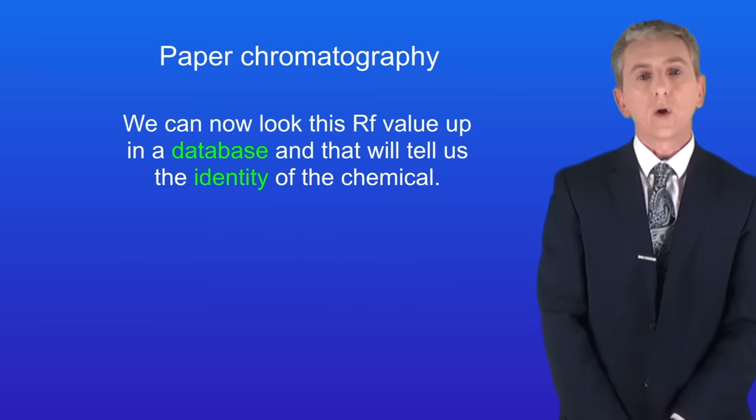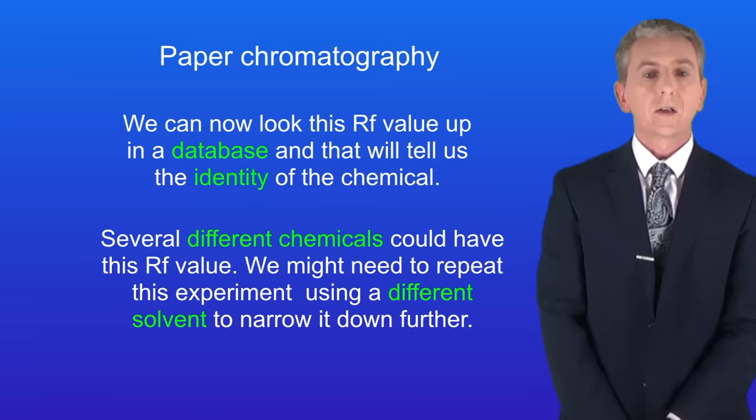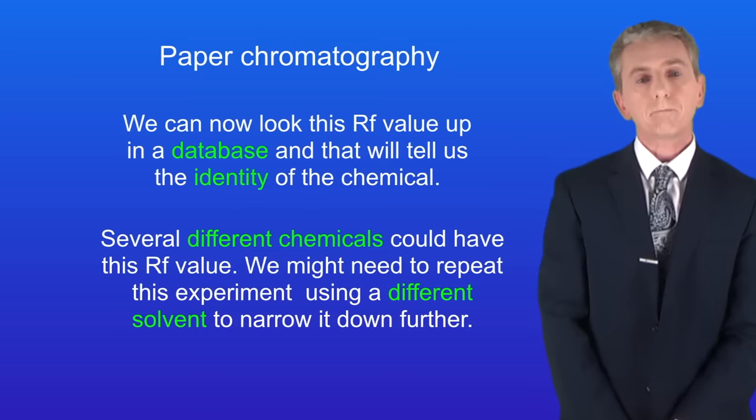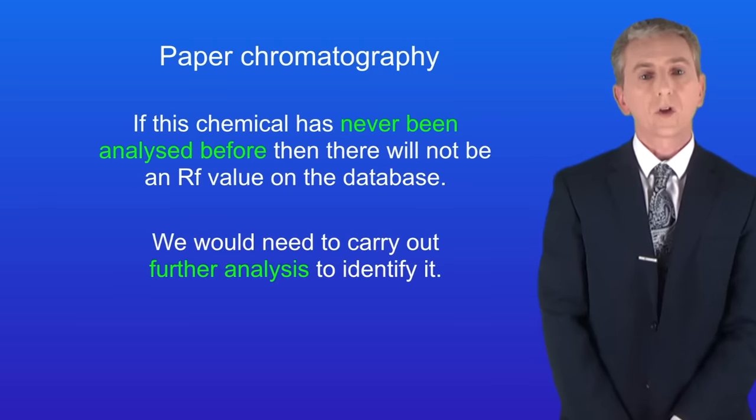We can now look this Rf value up in a database and that will tell us the identity of the chemical. Now I should point out that several different chemicals could have this Rf value so we might need to repeat this experiment using a different solvent to narrow it down further. Also if this chemical has never been analyzed before then there will not be an Rf value on the database so we'd need to carry out further analysis to identify it.